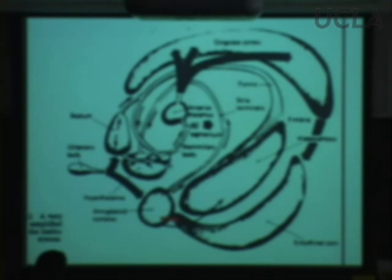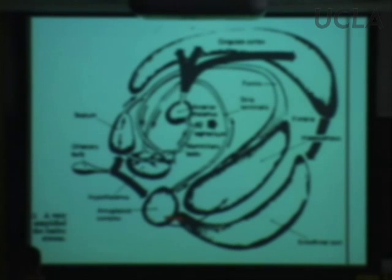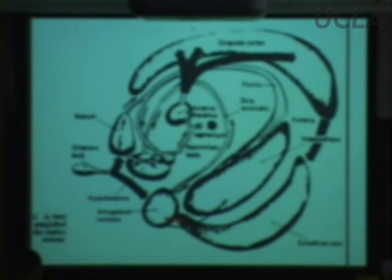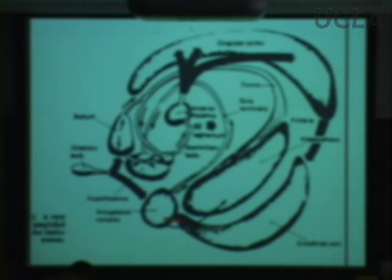The cell bodies of the mammillary bodies in turn project to the anterior nucleus of the thalamus. The tract connecting the mammillary bodies to the anterior nucleus of the thalamus is called the mammillothalamic tract. Please add that to your diagram.